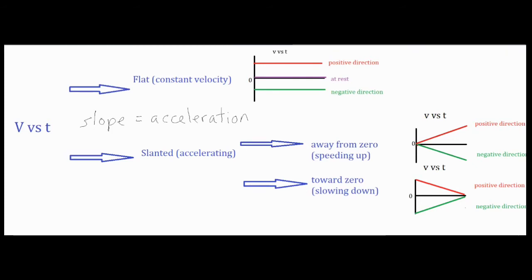Now one of the most common issues is that people will see a slope that is slanted in the positive direction and assume that's speeding up, or they'll see a slope that is negative and they'll automatically assume that it's slowing down. Neither of which are true.